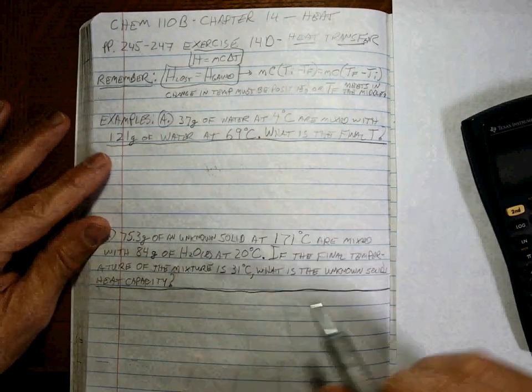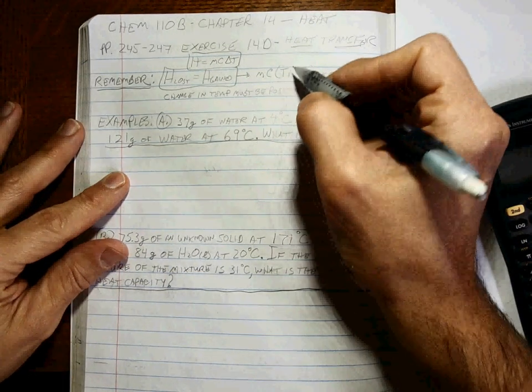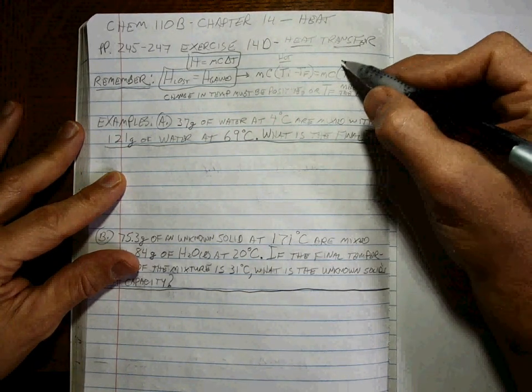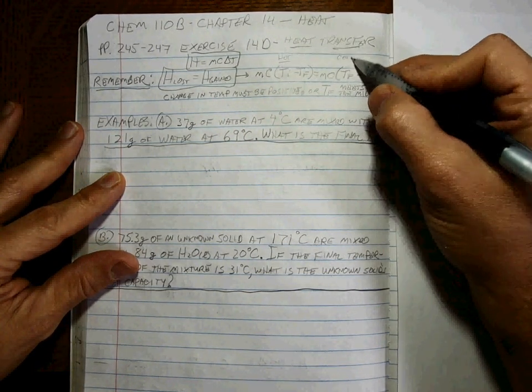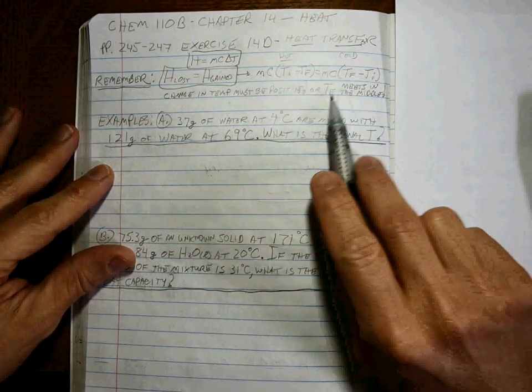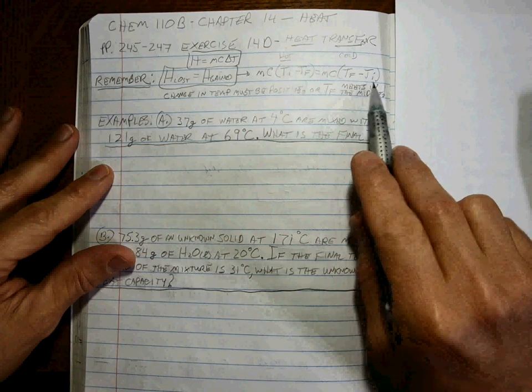So the heat lost by the hot is equal to the heat gained by the cold. The heat lost by the hot is going to be equal to the heat gained by the cold.